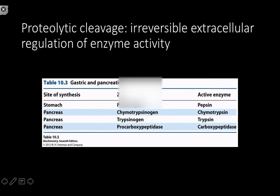Most proteolytic cascade enzymes are synthesized initially as something called a zymogen. The '-ogen' means generator. For example, the proenzyme pepsinogen is a pepsin generator; chymotrypsinogen is a chymotrypsin generator, and so on. They're usually synthesized in this inactive form, and then after proteolytic cleavage, they become active enzymes. Insulin also adheres to this strategy.